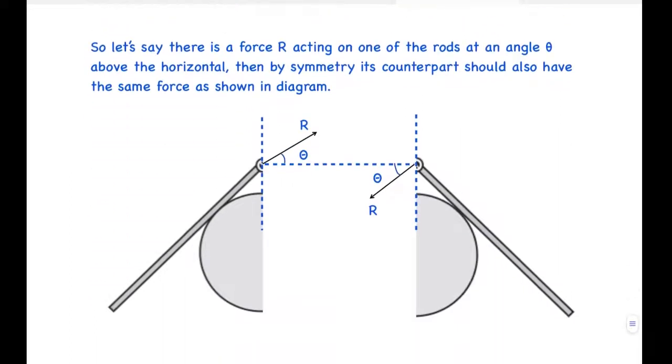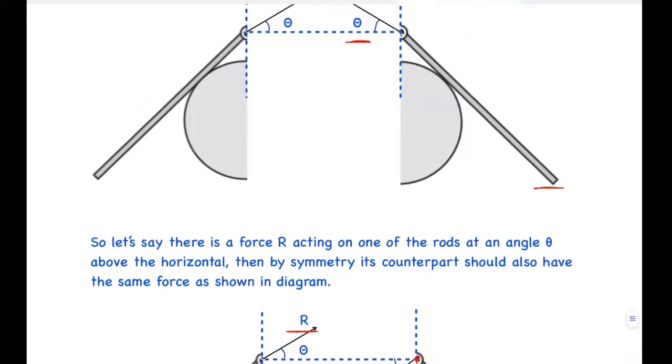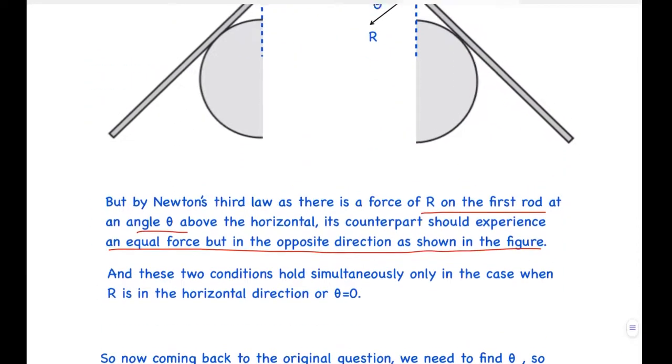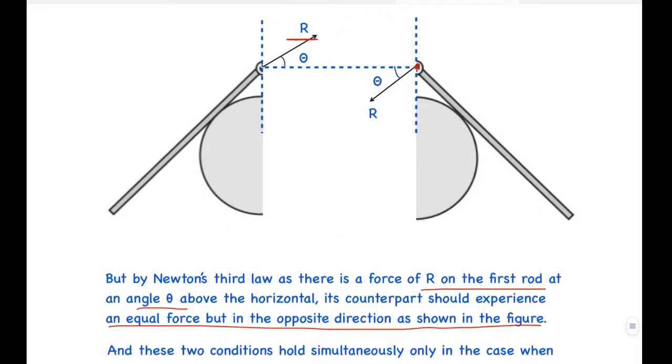Now by Newton's third law, if there is a force of R on the first rod at an angle theta above the horizontal, its counterpart should experience an equal force but in the opposite direction as shown in the figure. So the other rod should have the same force R at an angle theta below the horizontal. These two conditions need to be satisfied at the same time, which is only possible in the case when theta equals to zero, or the force R is acting horizontally on each rod.